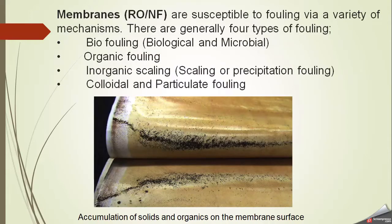Membranes, whether reverse osmosis or nanofiltration, are susceptible to fouling via different mechanisms. We normally categorize these foulings into four categories: biofouling (biological or microbial), organic fouling, inorganic scaling, and colloidal and particulate fouling. This picture, taken from a book, shows accumulation of solids and organics on the membrane surface.